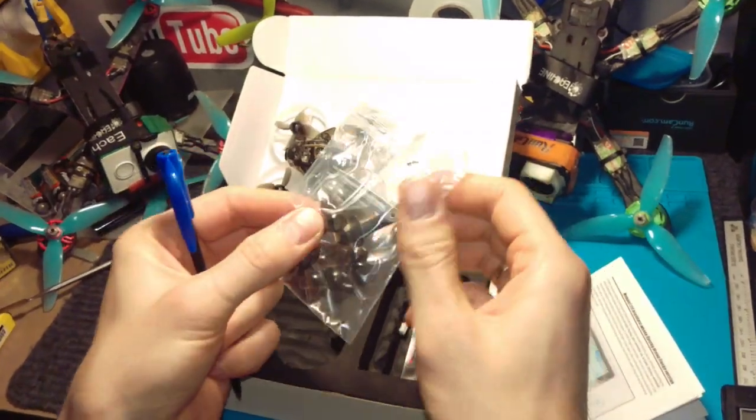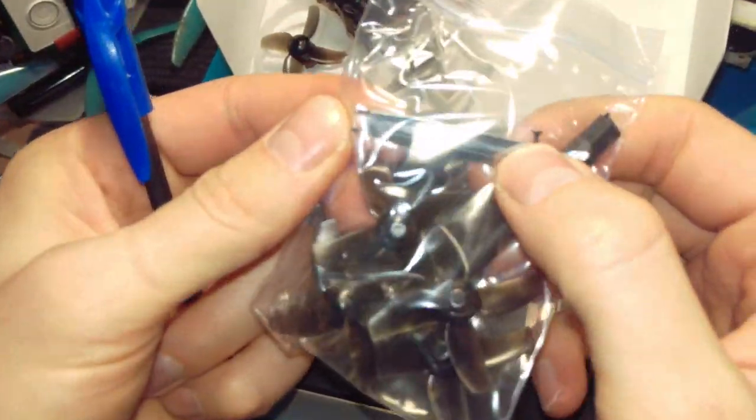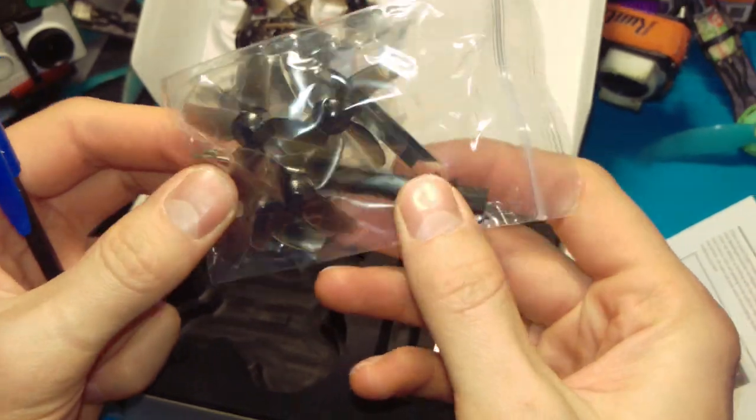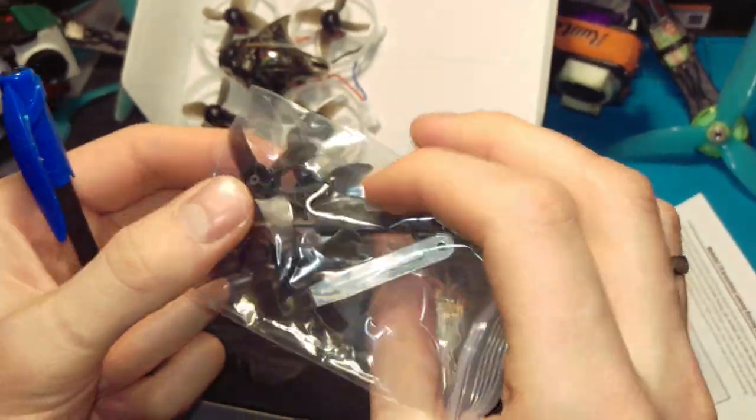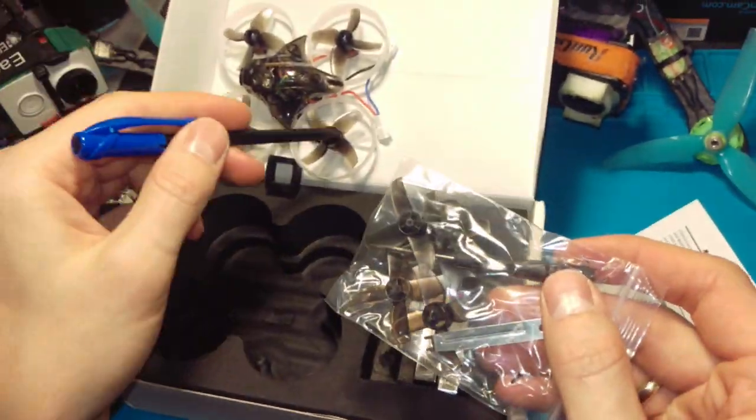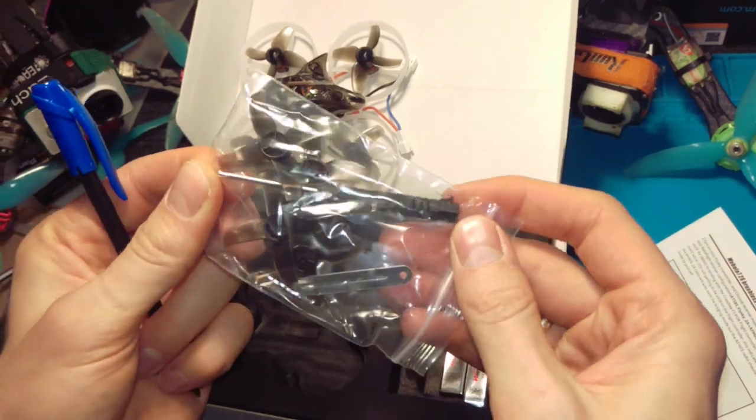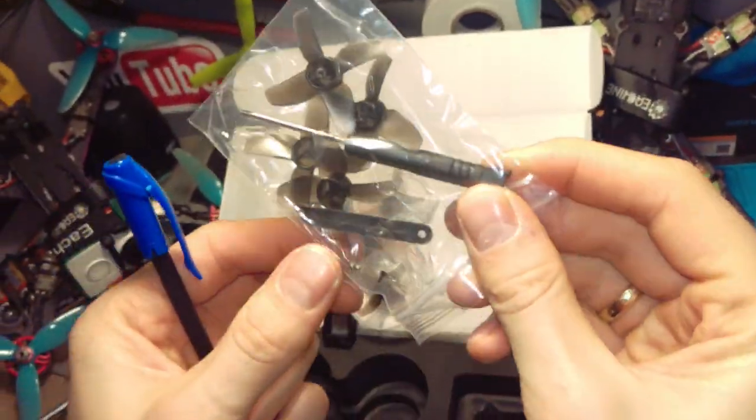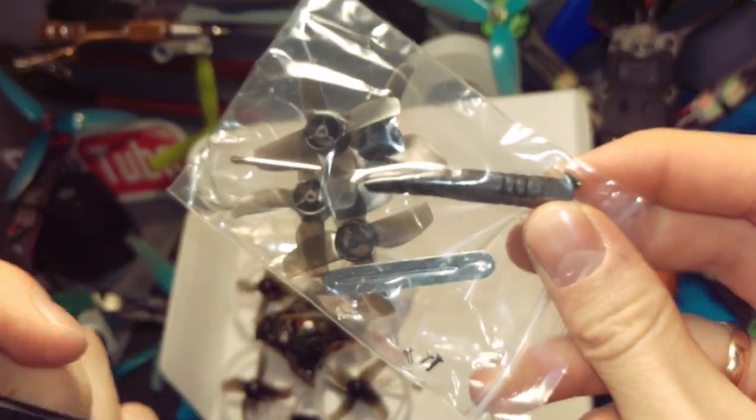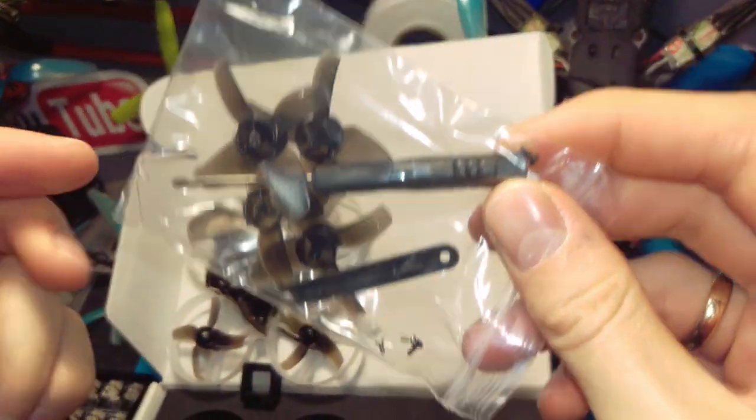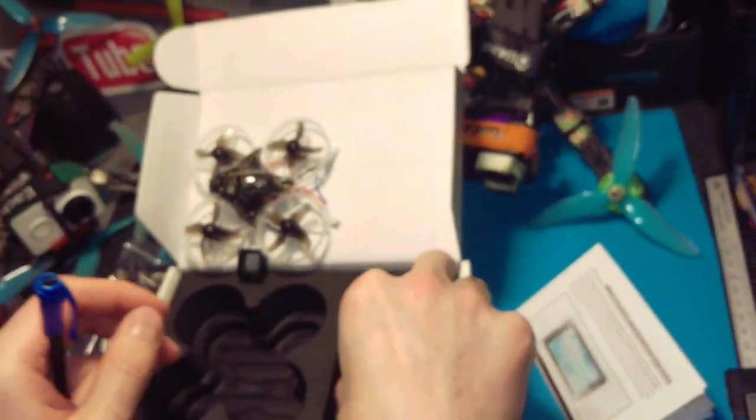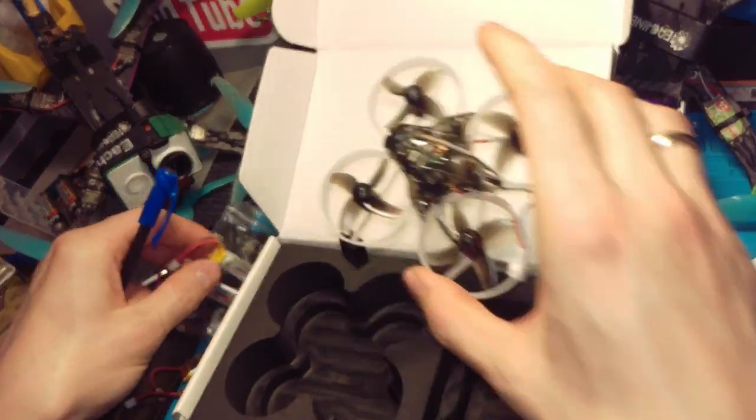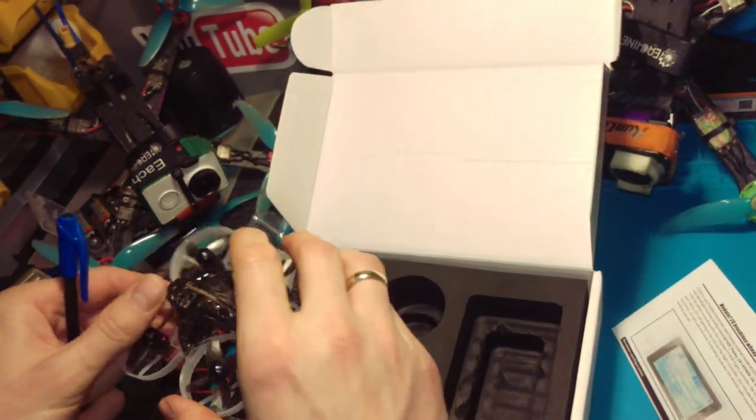Then we've got prop removal tools and a full set of props - plus one set on the model as well. A small screwdriver and a few tiny screws as you can see here, plus two batteries. I think that's it - a very quick unboxing.